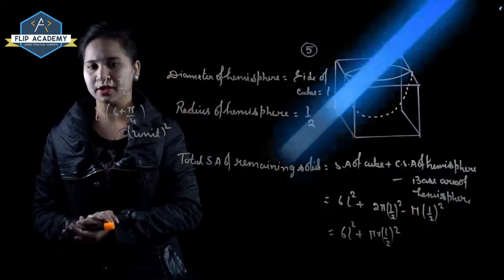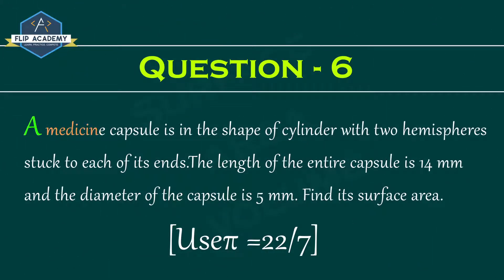Surface area and volume, exercise 13.1, question number 6. A medicine capsule is in the shape of a cylinder with two hemispheres stuck to each of its ends. The length of the entire capsule is 14 mm and the diameter of the capsule is 5 mm. Find its surface area. Use pi equal to 22 upon 7.